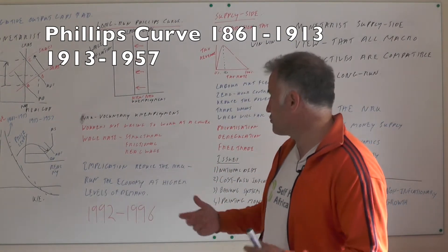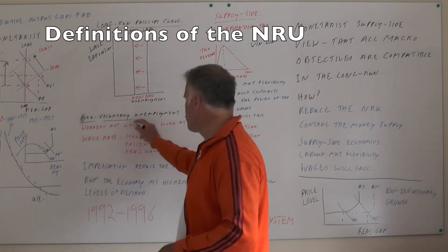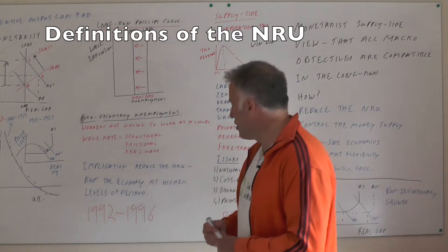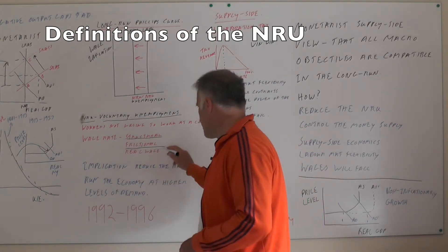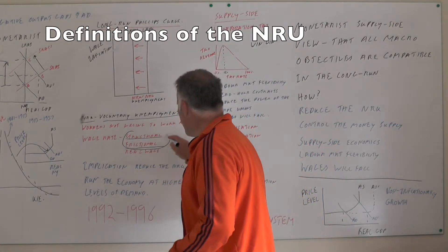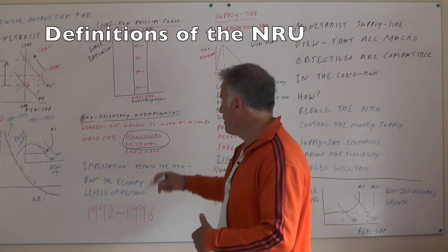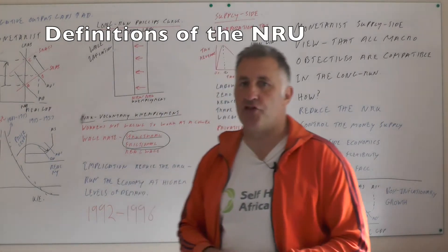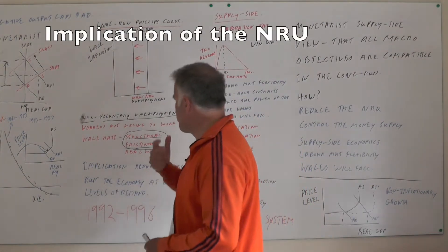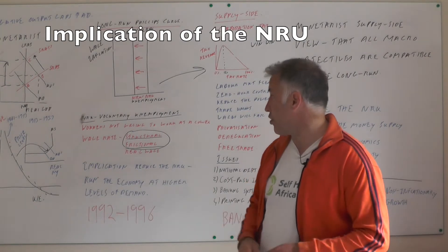The long-run Phillips curve is much more relevant today. The natural rate of unemployment is made up of voluntary unemployment — structural and frictional workers who could accept lower wages but don't, hence are classified as voluntarily unemployed. If we accept Friedman's long-run Phillips curve, there's no point increasing AD as it just increases inflation if you try to reduce unemployment below the natural rate, which we think is roughly 5% in the UK. The only way to reduce unemployment without causing inflation is to use supply-side policies to shift that long-run Phillips curve inwards.